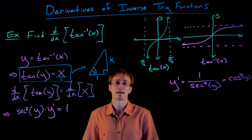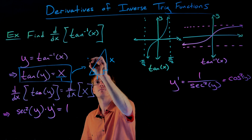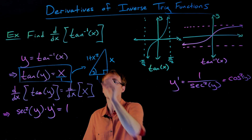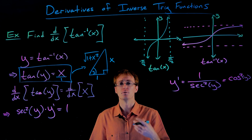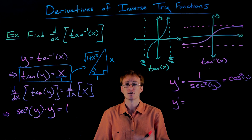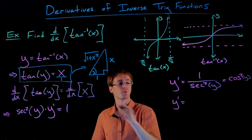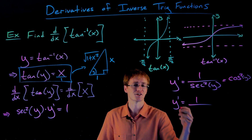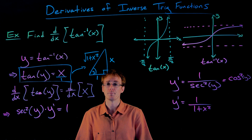We're going to find the hypotenuse's value in terms of x using the Pythagorean theorem. We know this side length squared plus this side length squared gives us the hypotenuse squared. So 1 squared plus x squared gives us the square of our hypotenuse, meaning the hypotenuse is the square root of 1 plus x squared. Now we can express cosine squared of y in terms of x. Cosine is adjacent over hypotenuse, but we have cosine squared, so we get 1 squared over the square root of 1 plus x squared, squared — which cancels the square root. So our derivative y prime is 1 over 1 plus x squared.